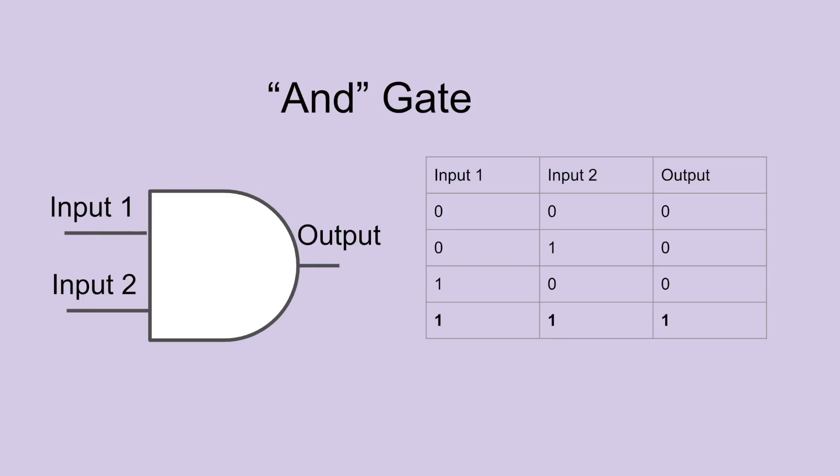The next tool we'll need is called an AND gate. This has two inputs. It can be summarized with this table. The output is always 0, that is to say the light bulb is always off, unless both input 1 and input 2 are 1.